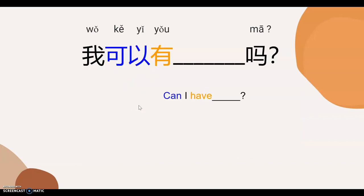Now I'm going to introduce a second useful sentence pattern: 'Can I have something?' In Mandarin, the order is 'I can have.' 我可以有。 And then you need to add one word at the end of the sentence to make it into a question. 马? So the structure is 我可以有 [something] 吗? Now it's your turn to say 'Can I have.' 我可以有。吗。